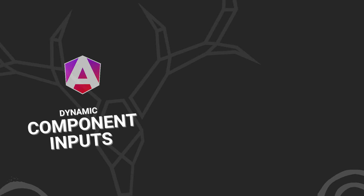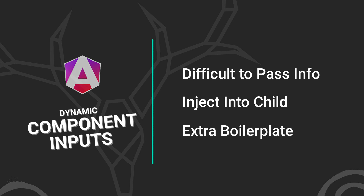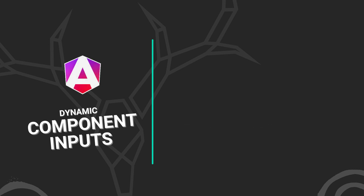If you're using dynamically created components in Angular, you probably found it difficult to pass information between the parent and the child components when needed. You need to provide the info in the parent and then inject it within the child component. While it's not necessarily difficult to do, it results in a lot of extra boilerplate code. It would be so much better if we could just use the input decorator like we're used to.